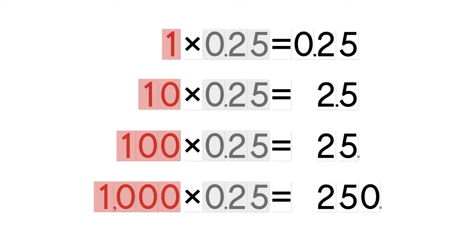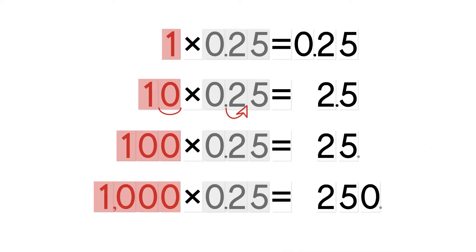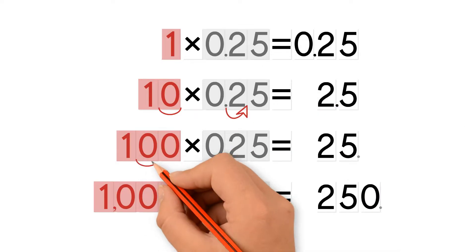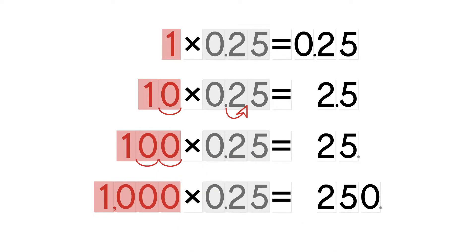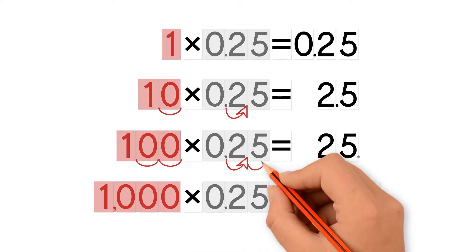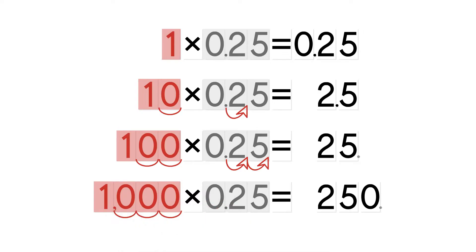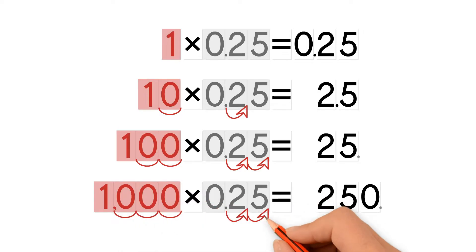When the number has one zero, we move the decimal point one place to the right. When the number has two zeros, we move the decimal point two places to the right. When the number has three zeros, we move the decimal point three places to the right. And so on.